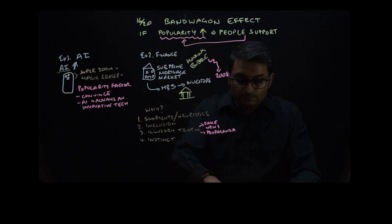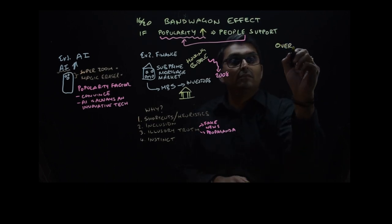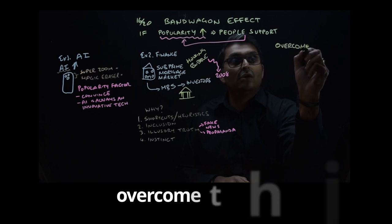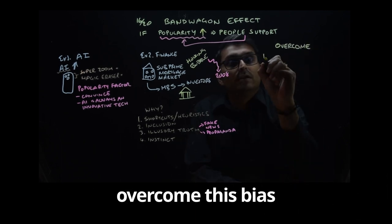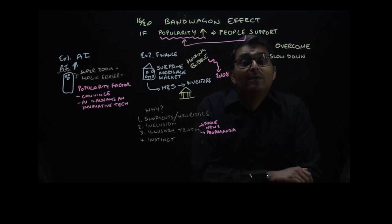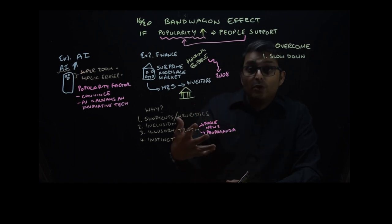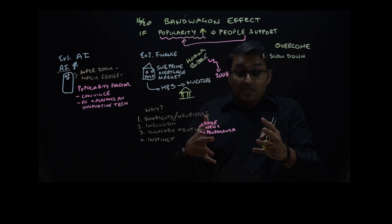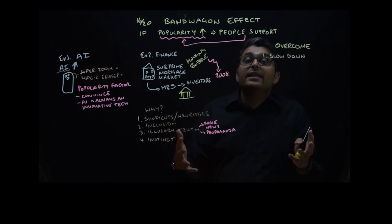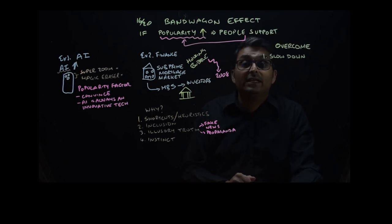So how do we overcome this bias? Number one: slow down. Slow down the decision-making process by allowing time to pass from when we or you notice social signals. I would say go further as to isolate yourself from outside input before making a decision.